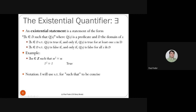An existential formula is false if and only if Q(X) is false for all elements in domain D — there exists no element for which Q(X) is true. For example: there exists M in integers such that M² = M. This only needs one element. Both 0²=0 and 1²=1 work, and since we need at least one, M=1 makes it true.